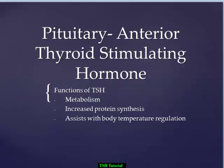Welcome to a tutorial on thyroid stimulating hormone, which is a hormone that is produced by the anterior pituitary. The functions of thyroid stimulating hormone are to cause the thyroid gland to produce thyroid hormones. Thyroid hormones is the broad term we use to discuss hormones produced by the thyroid, which include T3 and T4. The functions of thyroid stimulating hormone are based in metabolism, and metabolism seems fairly superficial until you consider all of the many things in the body that are directly related to metabolism.